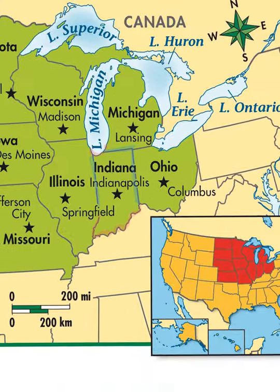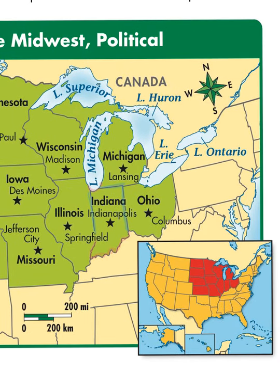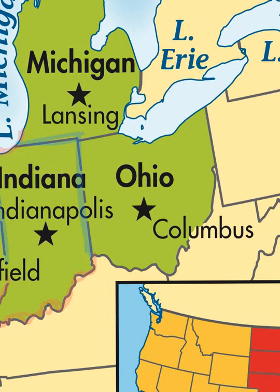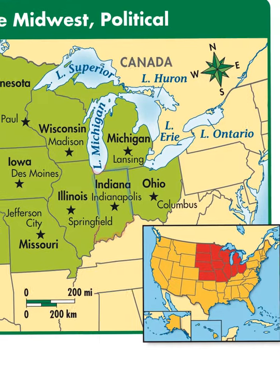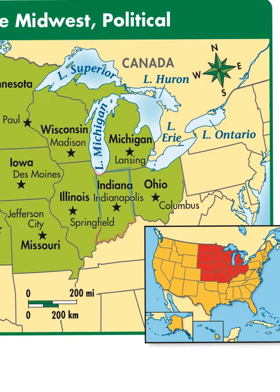These lines are political borders. They don't physically exist in the world. When people were first deciding where to establish boundaries for states, if there wasn't a very obvious physical boundary like a lake, a river, or a mountain range, they just drew a line and said this side is Indiana and this side is Ohio.